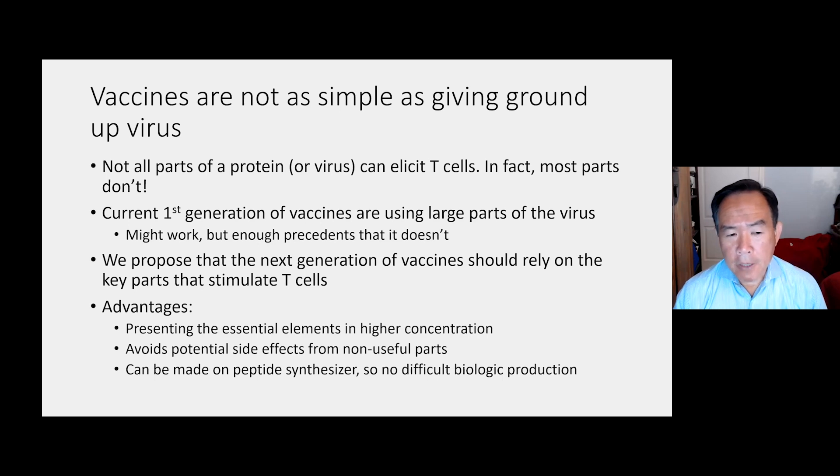The advantage of doing that is you're going to pick out the essential elements of the virus, and you're going to have a much higher concentration when you give it to a person. You're going to avoid potential side effects from the non-useful parts of the virus. That's especially true now. Just recently, they halted the AstraZeneca trial because of a side effect noted in one patient. We don't know whether it's due to having that whole part of the virus there, but certainly you can reduce the amount of side effects if you're just taking out the key parts of the virus.